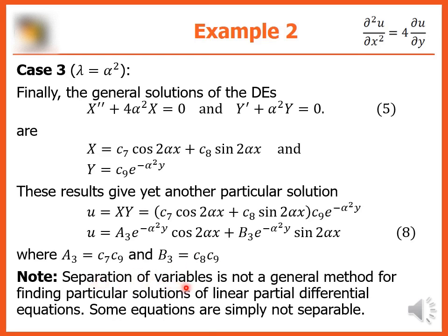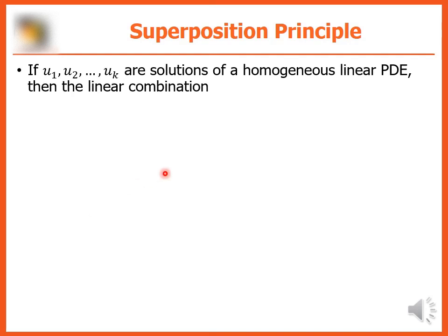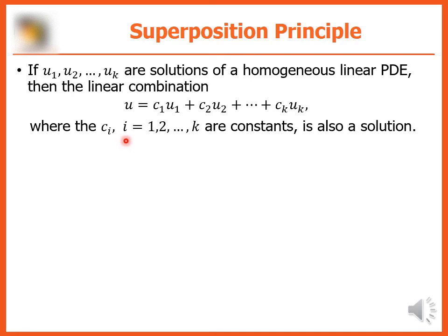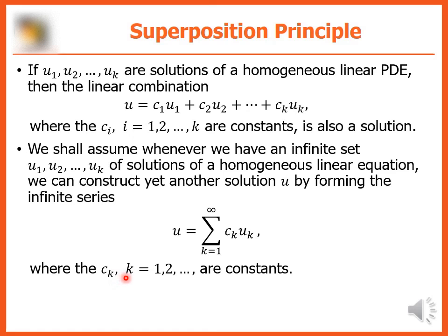Note that separation of variables is not a general method since some equations are simply not separable. For the superposition principle: if u₁, u₂, …, uₖ are solutions of a homogeneous linear PDE, then the linear combination u = c₁u₁ + c₂u₂ + … + cₖuₖ is also a solution. For an infinite set of solutions, we can construct u as the infinite series u = Σ(k=1 to ∞) cₖuₖ, where the cₖ are constants.